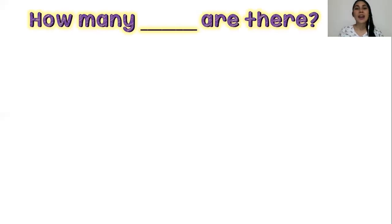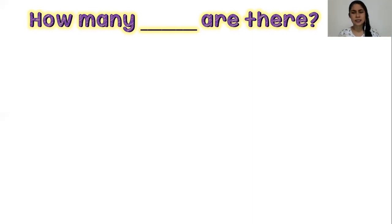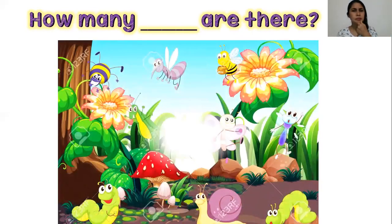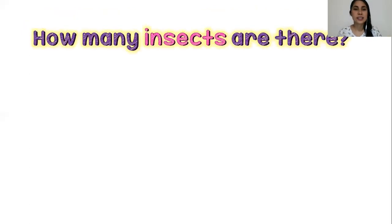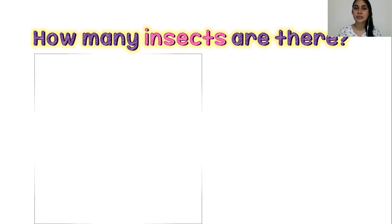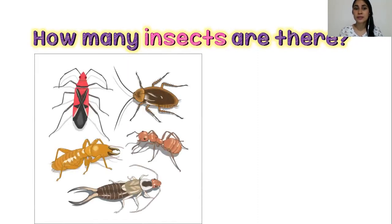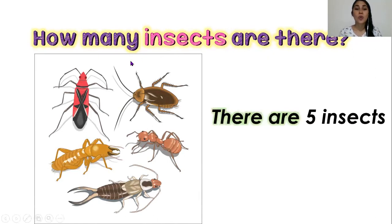First example: how many are there? This is a question, how many are there? Let's see another example. How many insects are there? Let's count: one, two, three, four, five.